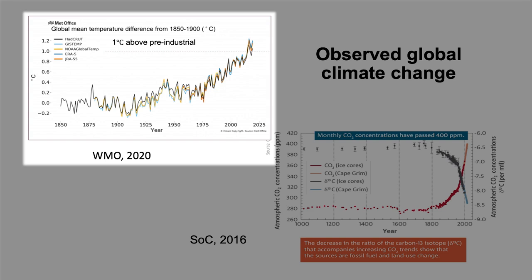Thank you for joining me today on this discussion around climate change and its importance to Australia and to the world. What I want to talk about now is what's happened globally in terms of global average temperature variations from 1850 right up till 2019, showing temperature variations or anomalies relative to that baseline. Global average temperatures have risen now by more than one degree — about 1.1 degrees relative to pre-industrial levels.